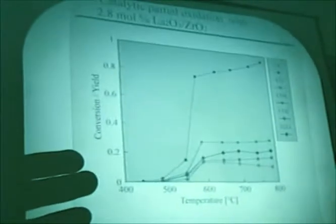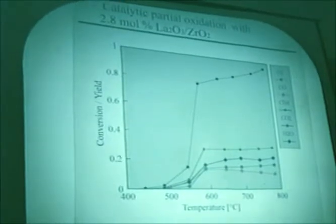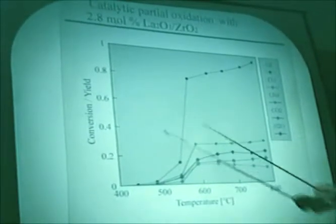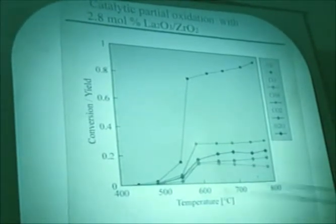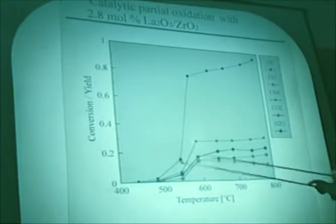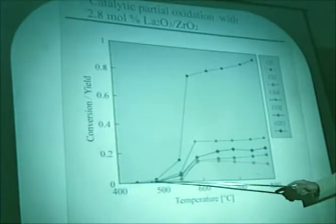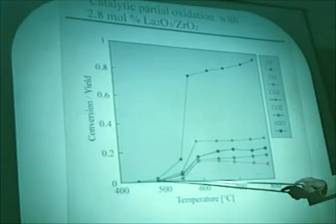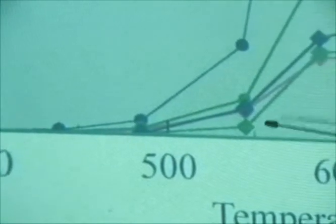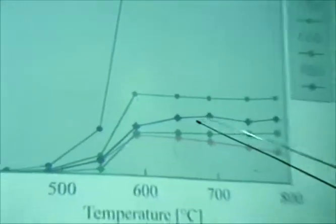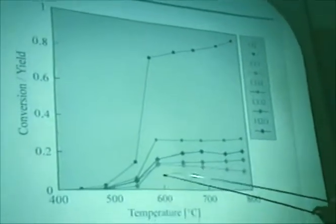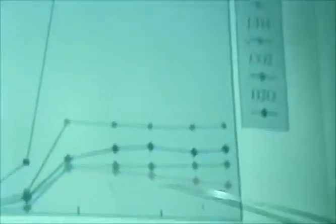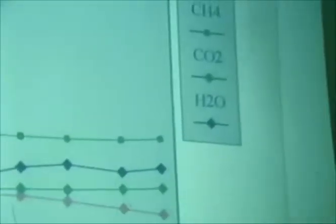Comparing with a lanthanum on zirconia catalyst — again conversion and yield versus temperature — you can see that already at incomplete oxygen conversion, CO is formed. It looks as if CO is a primary product and CO₂ is a secondary product. Hydrogen is actually following the CO line in this plot.